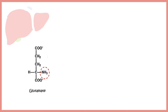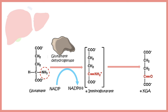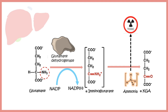The amine group is released from glutamate by glutamate dehydrogenase. This enzyme converts glutamate into an alpha-iminoglutarate intermediate, which then gets converted to alpha-ketoglutaric acid, ultimately releasing ammonia. The problem is that ammonia is highly toxic and highly soluble in the blood; if not excreted properly, it can generate huge problems including toxicity in the brain.